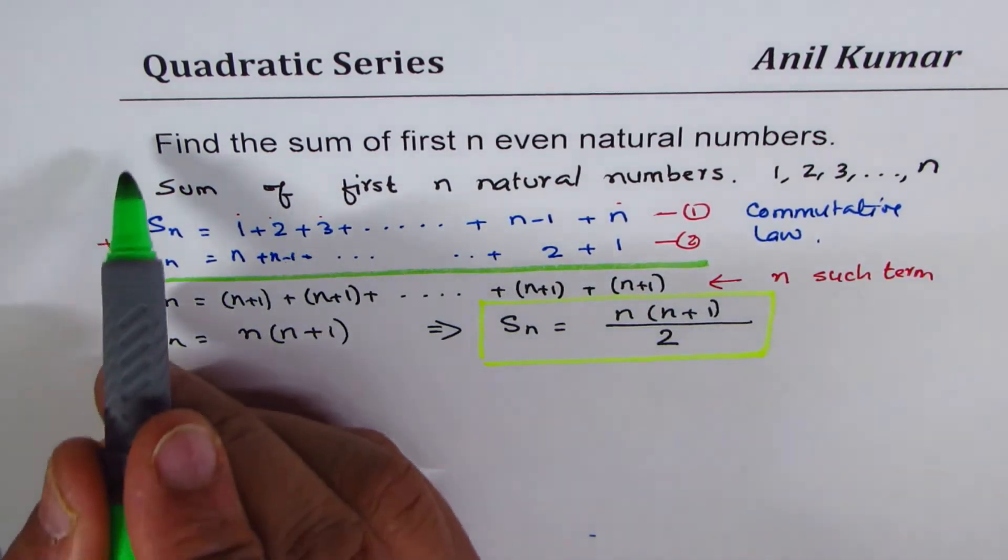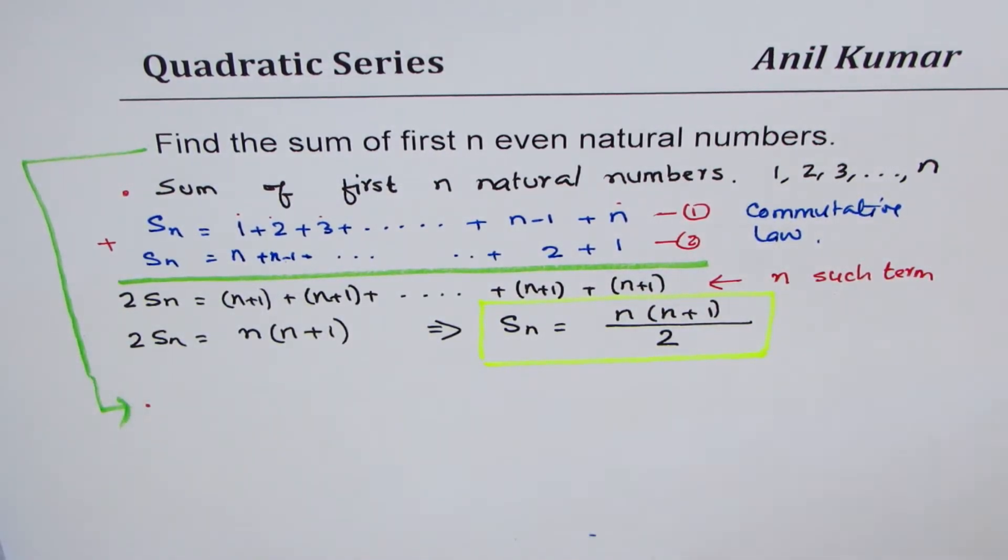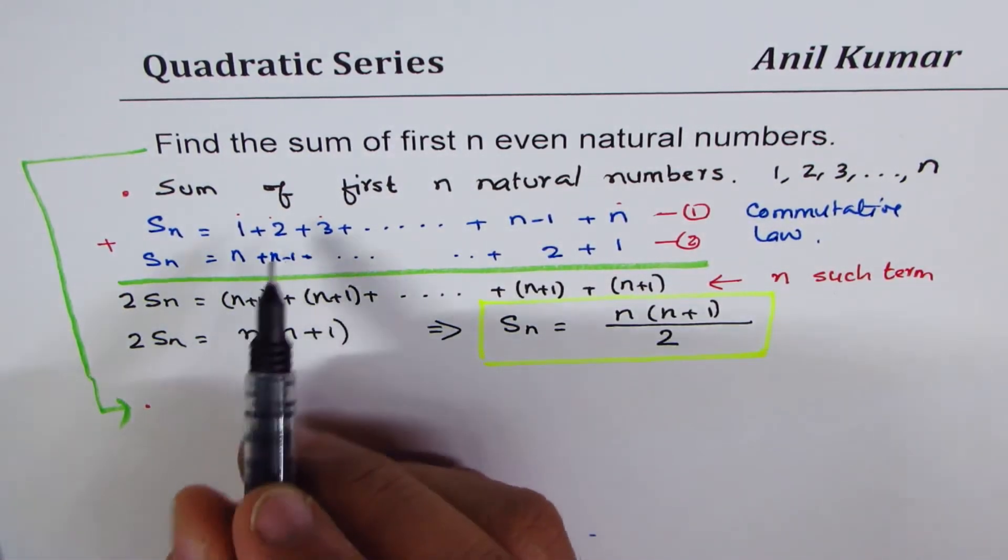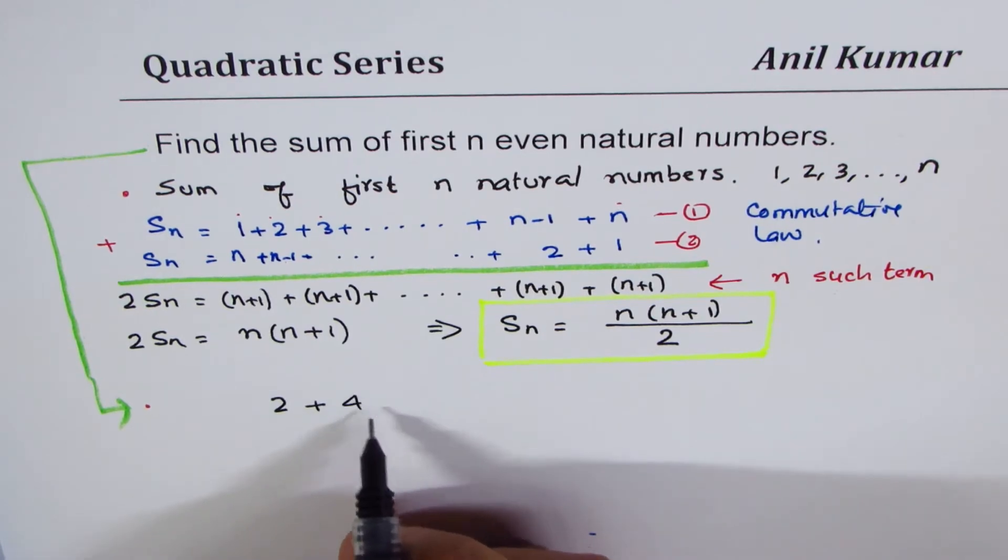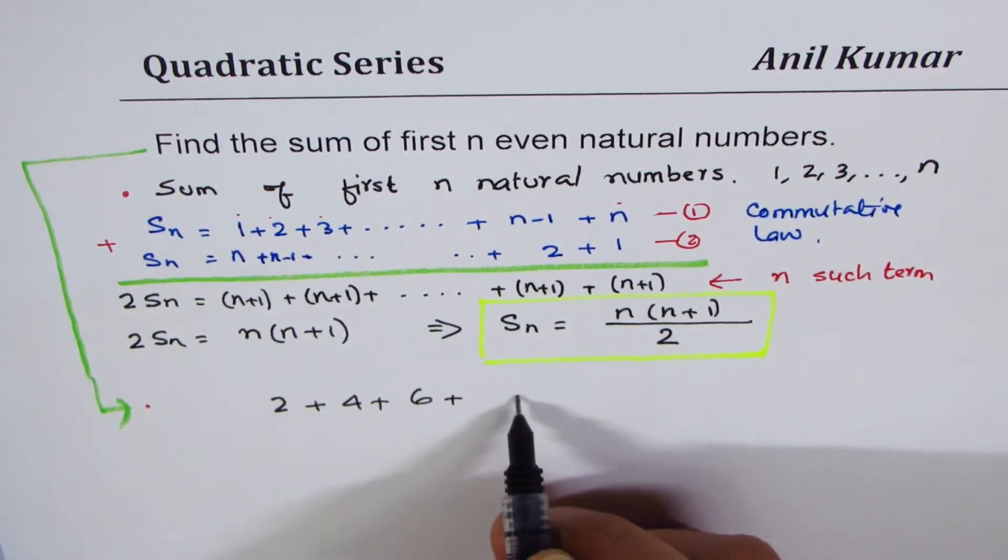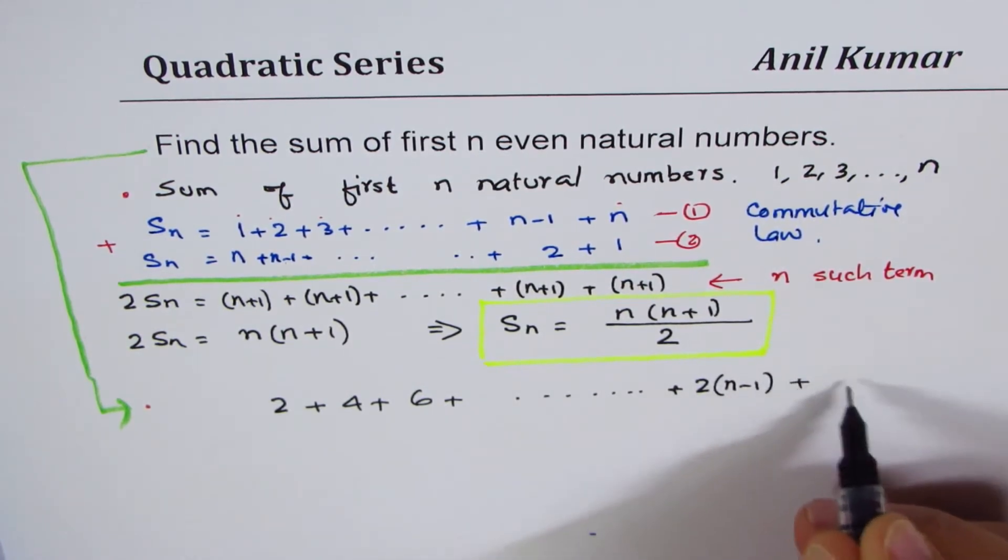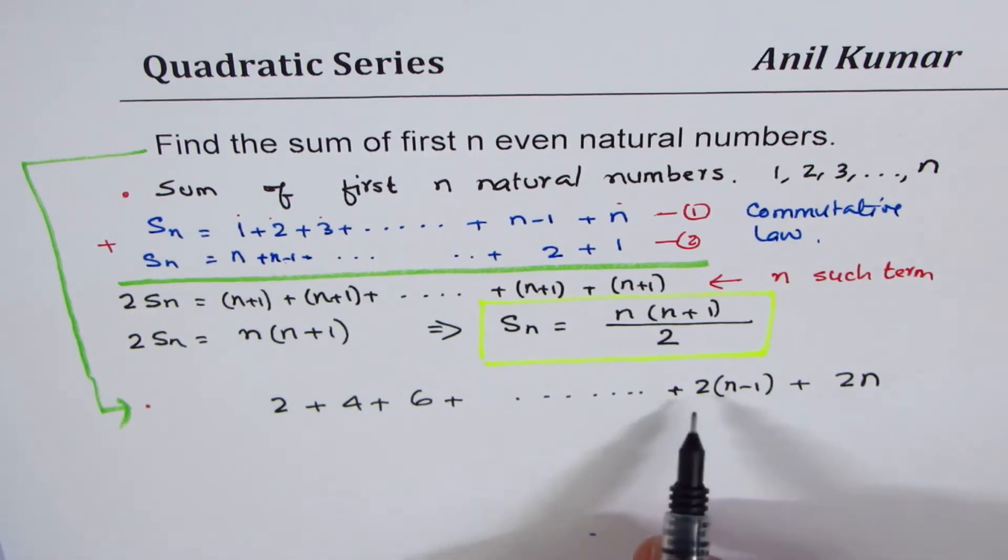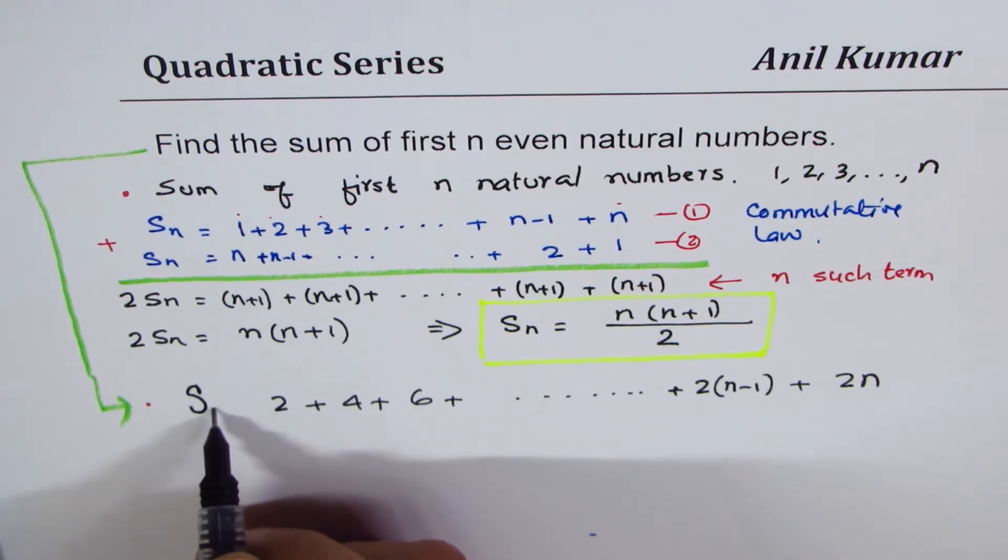And that is, find the sum of first n even natural numbers. First n even natural numbers. What are even natural numbers? Even natural numbers will be, one is not even, two. So, we get two plus four plus six plus so on. So, until each number actually gets multiplied by two. So, until two times n minus one plus two n. Do you see that? So, these are actually n numbers. Let me call this as S capital N.